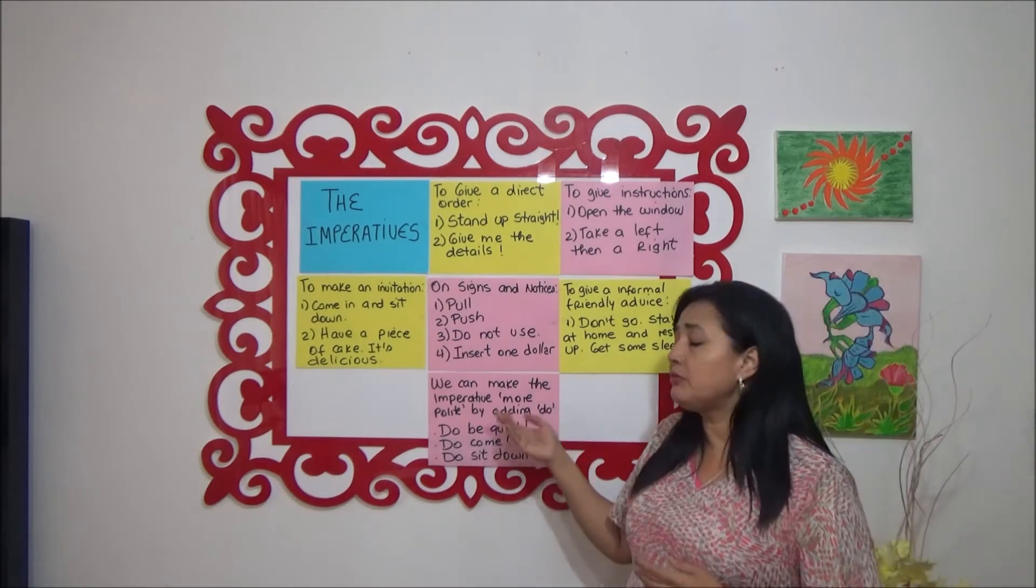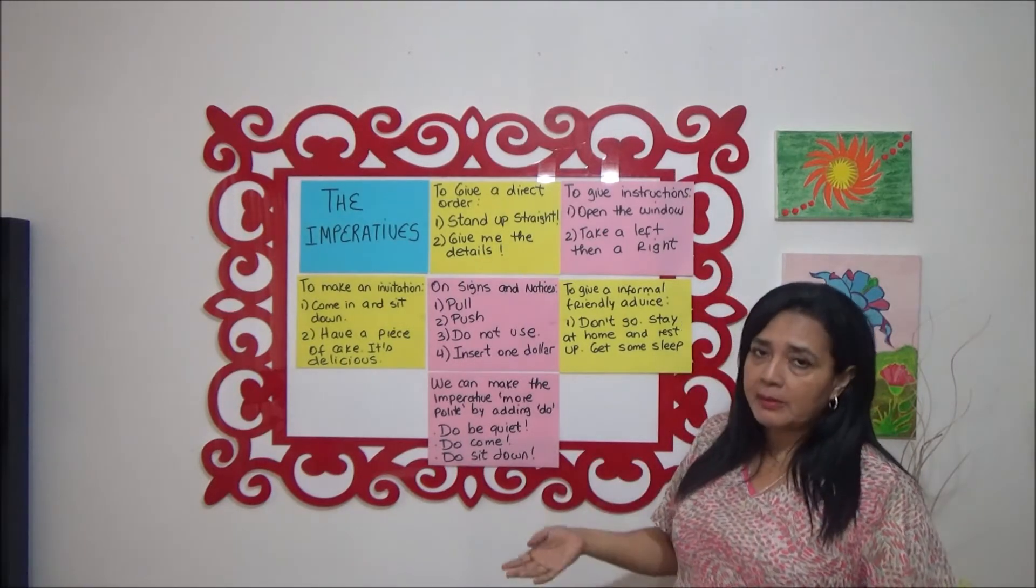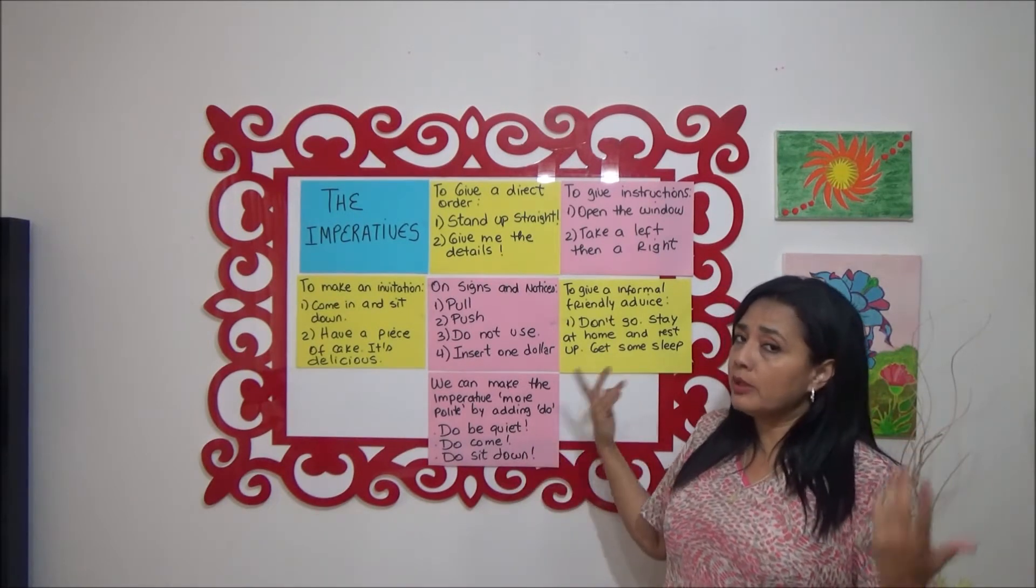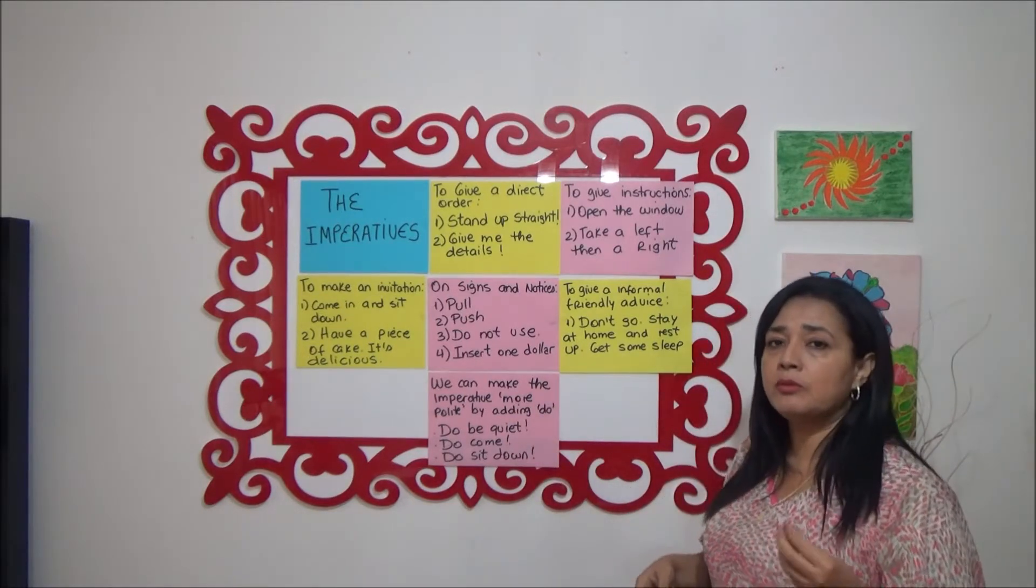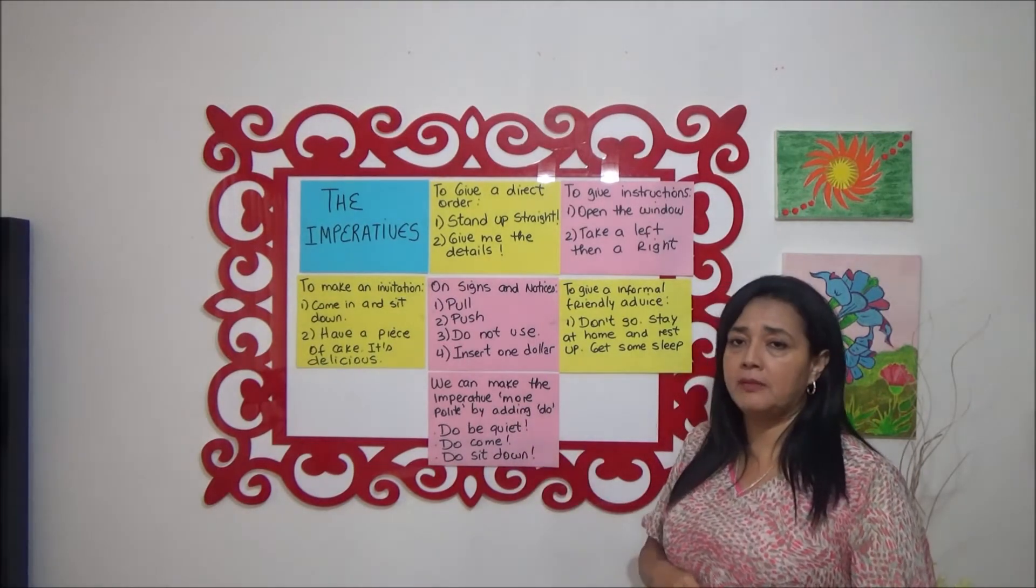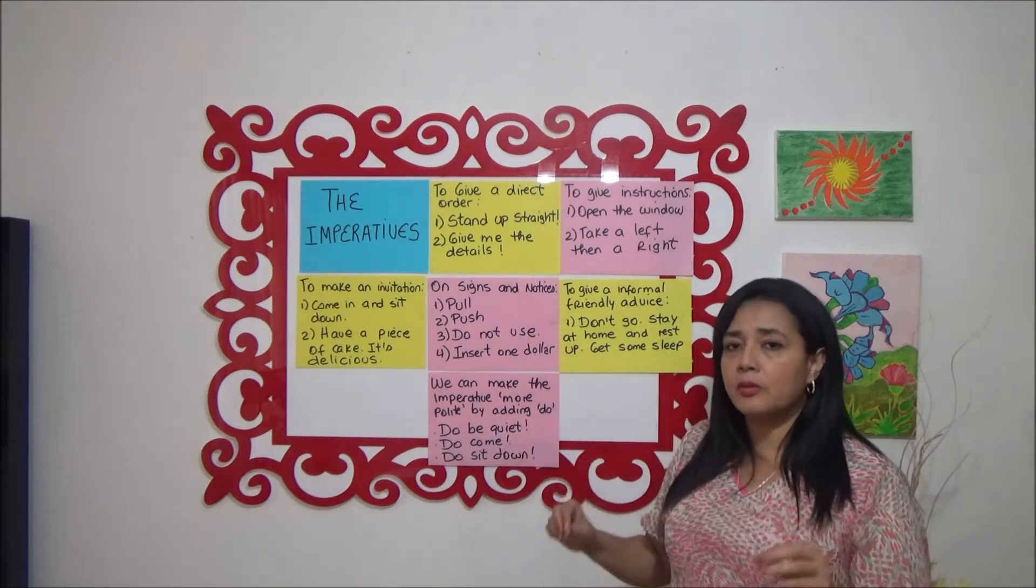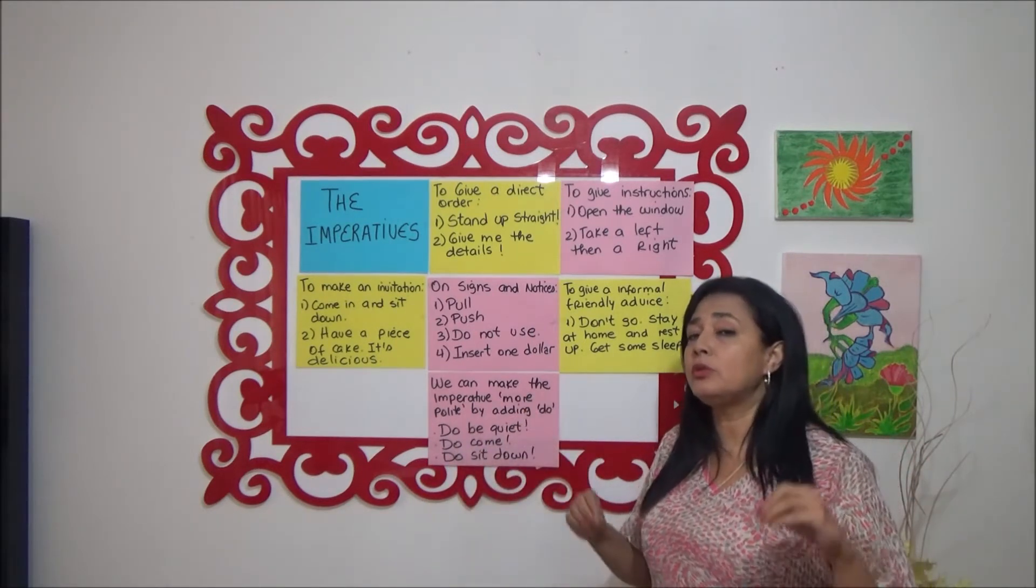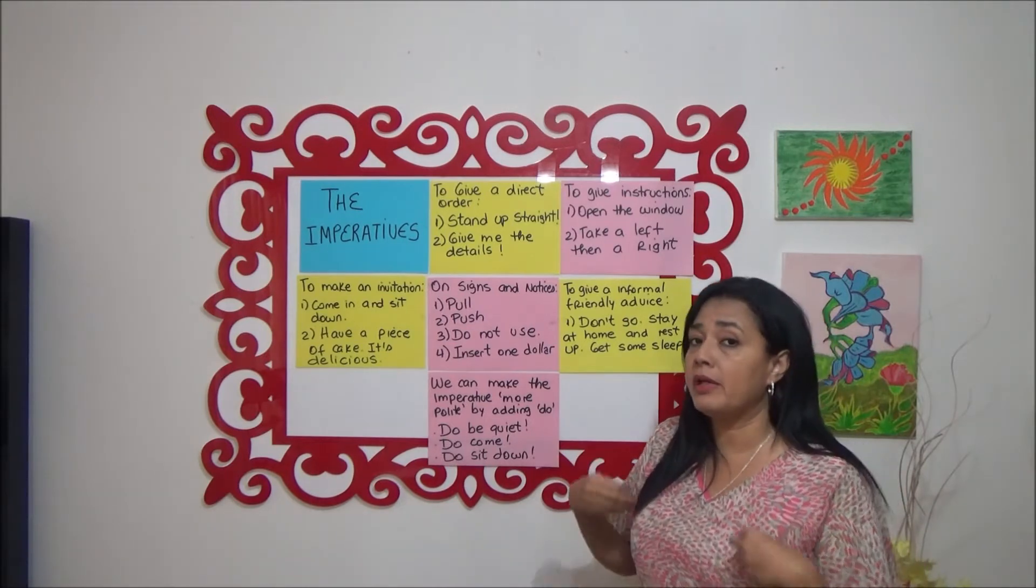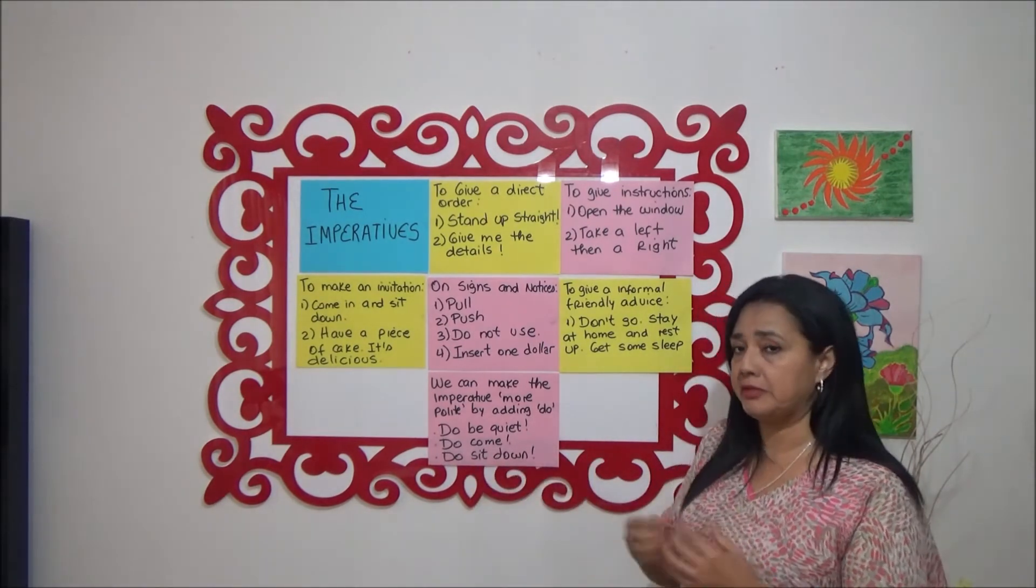A veces el imperativo puede sonar un poco rudo, porque no tiene sujeto, no tiene verbo. Bueno, sí tiene verbo, pero el verbo en infinitivo, como una orden. We can make the imperative more polite. Lo podemos poner un poco más educado, siempre que le agreguemos do. Recuerden que cuando ponemos do en una oración afirmativa, estamos enfatizando esa oración. Por ejemplo, do be quiet, estate quieto o estate en silencio. Do come, por favor ven. Do sit down, por favor siéntate. El do no es que quiera decir por favor, es que estamos haciendo una insistencia en que alguna acción se realice.